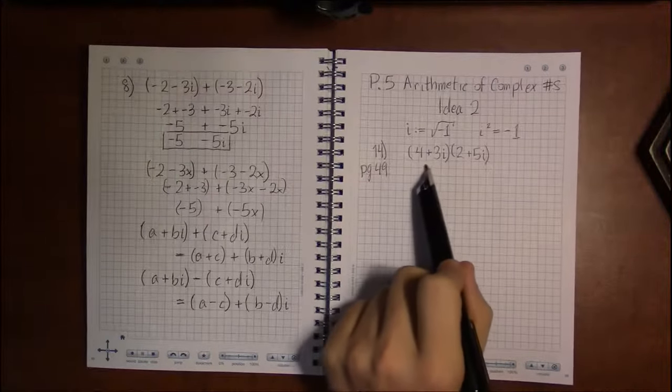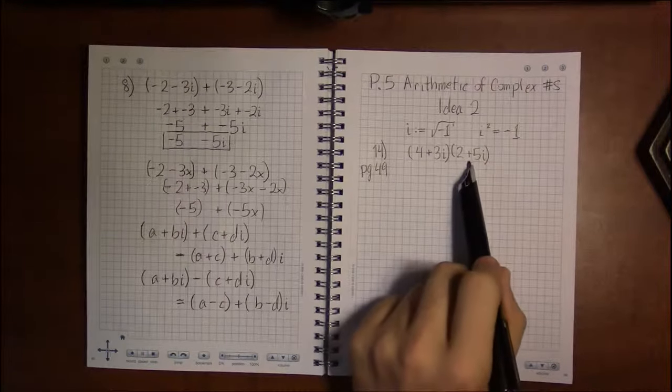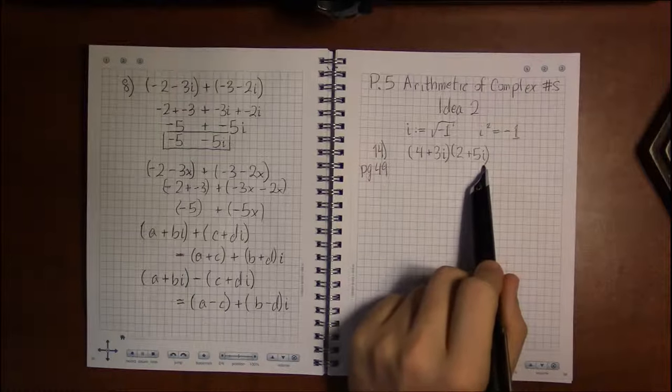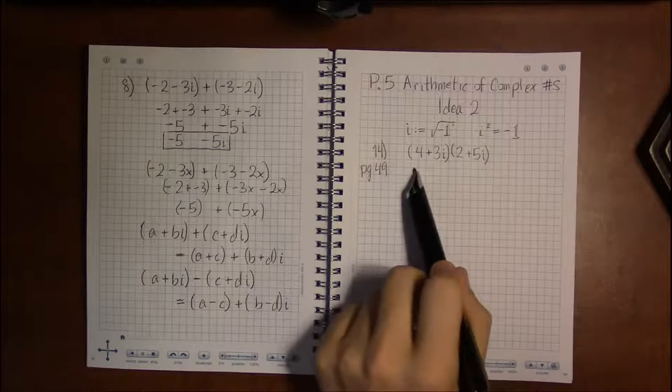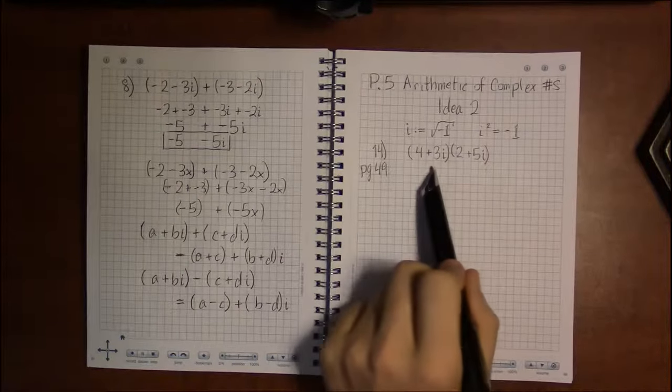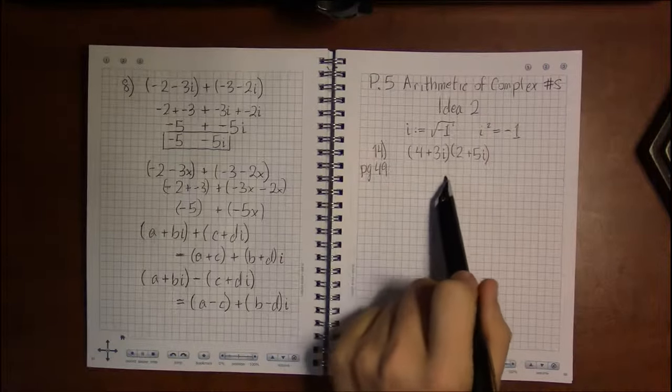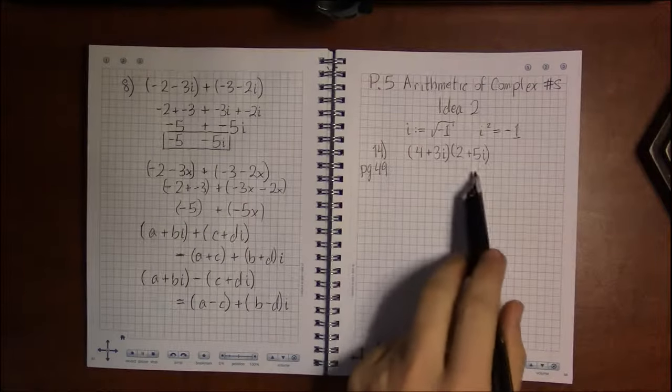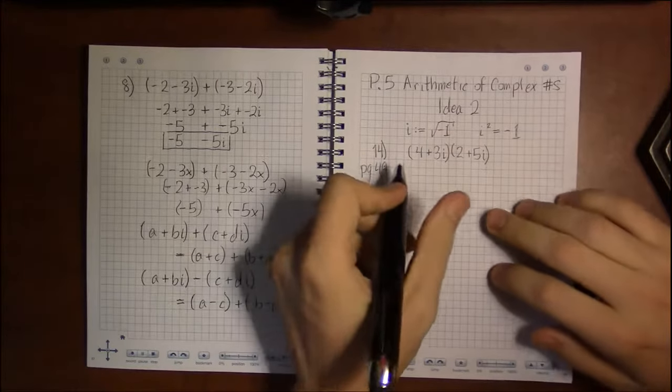Now, looking at this, I'm really tempted to distribute, I'm really tempted to FOIL, and that's exactly what I do. This is how I multiply complex numbers. I'll get to a formula if you prefer formulas, but this is how I multiply complex numbers.